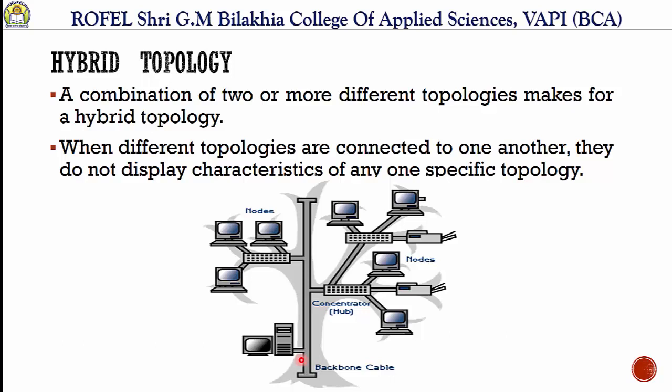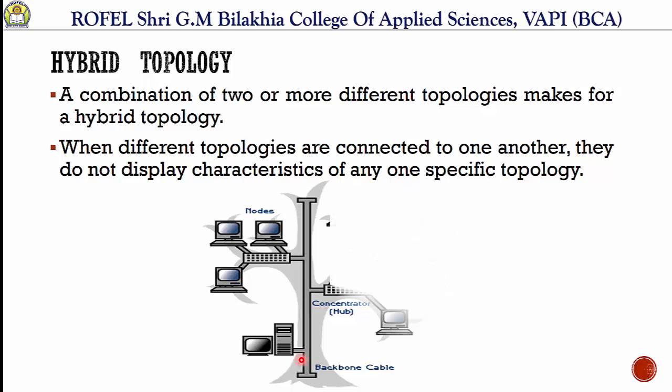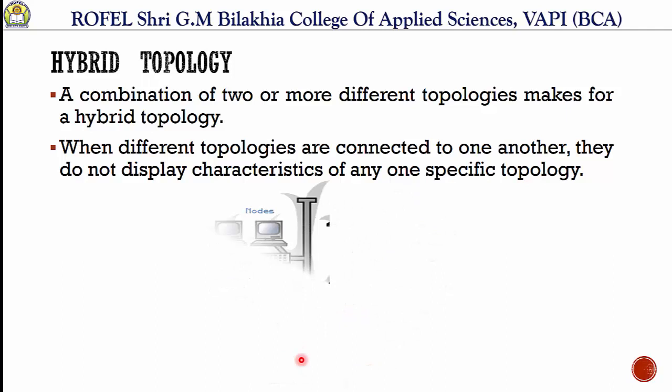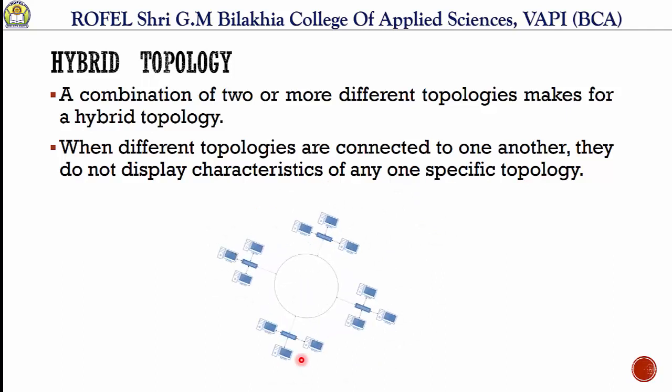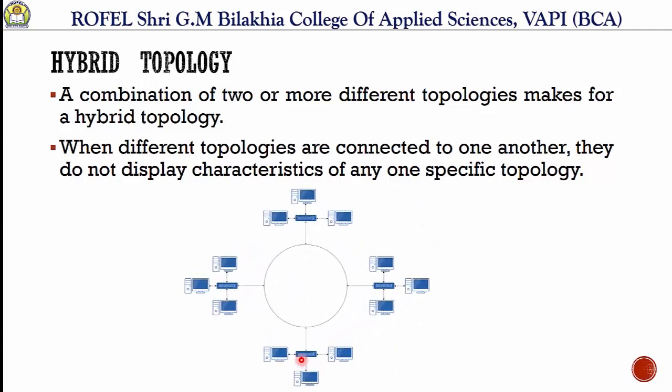Tree topology enables schools to configure a network to meet their needs. Another topology is star-ring topology, in which all star networks are connected in a ring to make a star-ring topology. It combines the features of star topology as well as ring topology. However, in the syllabus there is only one topology required, which is star-bus topology.